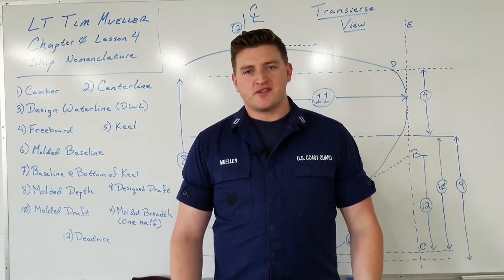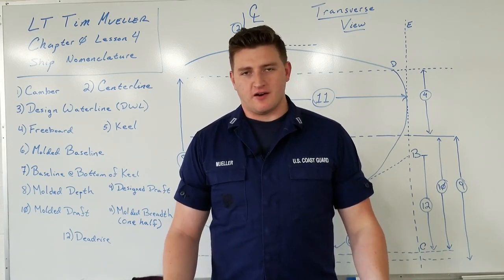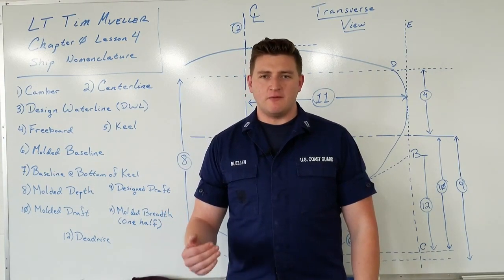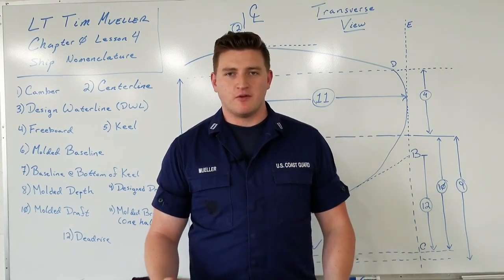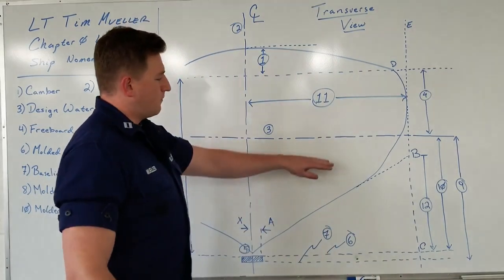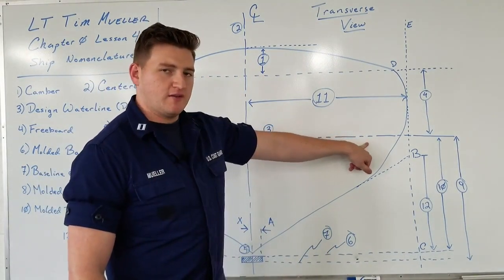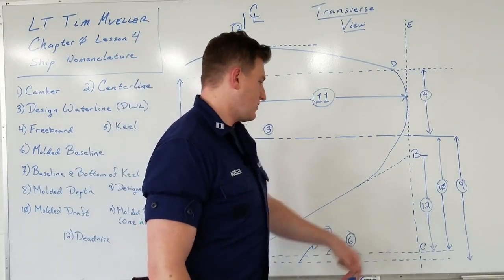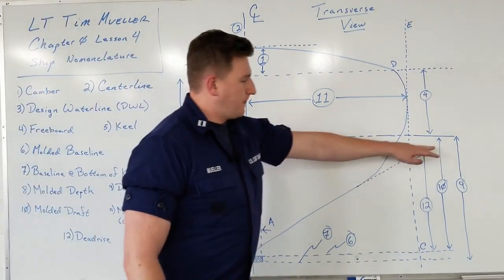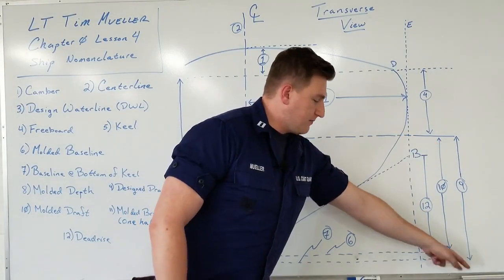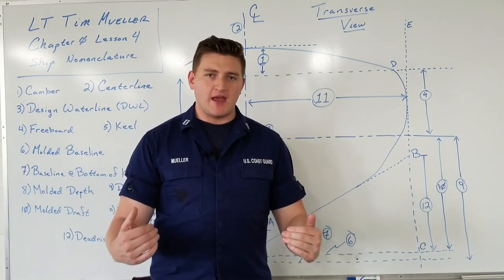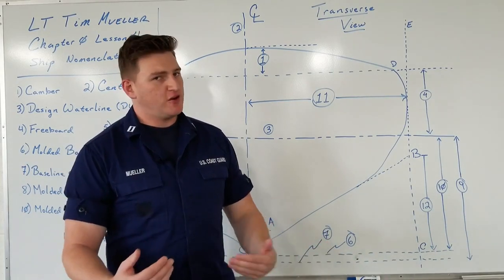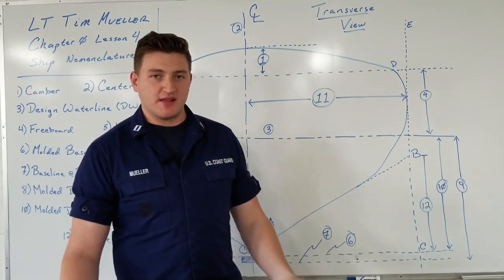Next is design draft. If you've stood next to a Navy, Coast Guard, or cargo ship at a pier, you've probably noticed numbers at the waterline telling you how much ship is underneath the surface. Design draft is the distance from the design waterline all the way to the baseline at the bottom of the keel. This tells us exactly how much ship is beneath the water, which allows us to make chart corrections, voyage planning, and navigation so we don't hit anything while steaming along.